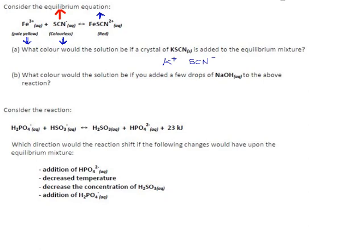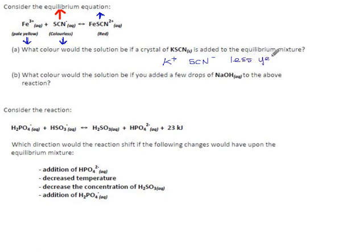They ask about the color that will appear when this happens. On the left side, when there's a lot of iron and SCN⁻, we have the pale yellow color from the iron and nothing from the SCN, so this side essentially looks yellow. The iron compound looks red. So if the equilibrium shifts to the right, the yellow color should fade and the red color should increase. It would be fair to say it'll become less yellow, more red.